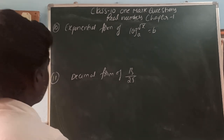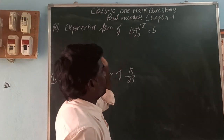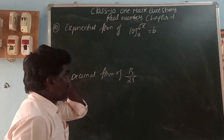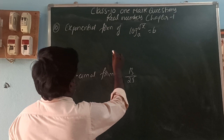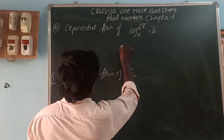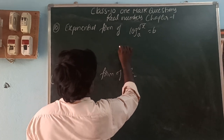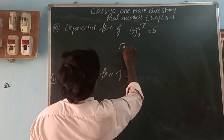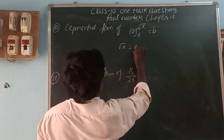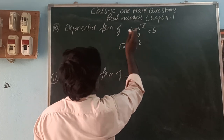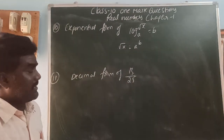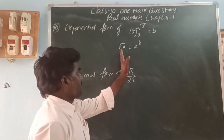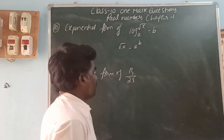The exponential form of log(√x) base a = b: we can write this as √x = a^b.